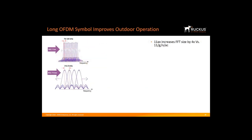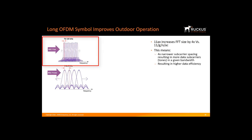Let's look at how OFDM Long Symbol improves outdoor operation. 11AX maintains the same channel bandwidth as 11AC, such as 20, 40, or 80 MHz. However, it increases the fast Fourier transform, or FFT, size by a factor of four. This means there are four times more subcarriers in a given bandwidth, resulting in a four times reduction in the subcarrier spacing.